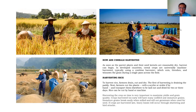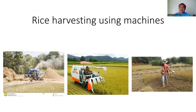Crops harvested too early will have many unfilled and immature grains. Immature grains break easily when milled and will not germinate if used as seeds. If crops are harvested late, heavy losses occur through shattering and bird attacks. Rice harvested too early is not good to eat and commands a lower market price. Modern machines are now available — one harvester in the middle, and another that is semi-manual using a grass cutter to separate the grains.